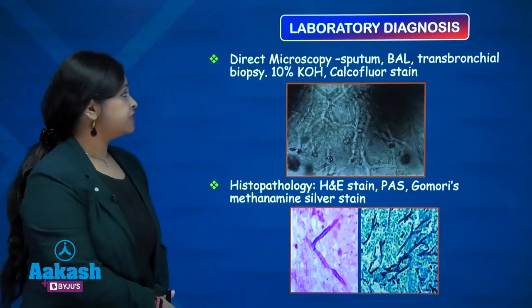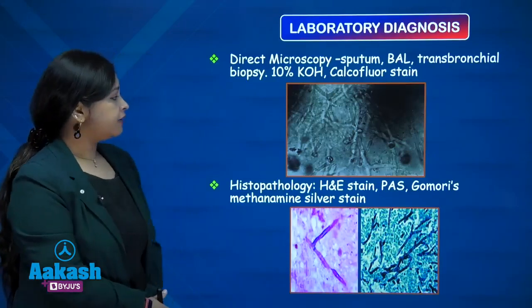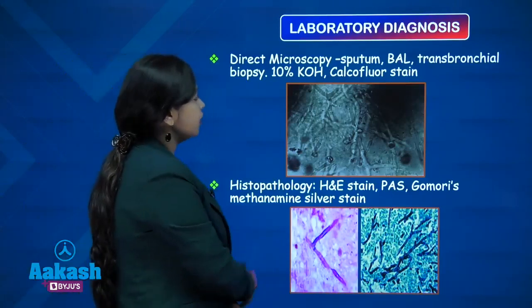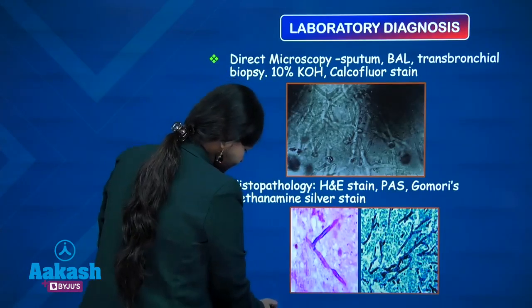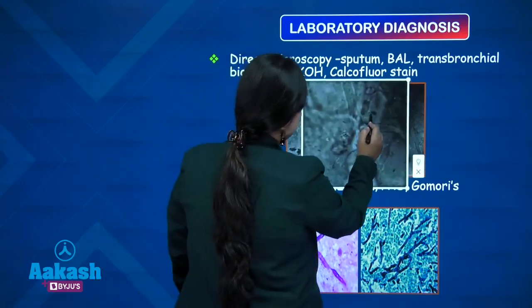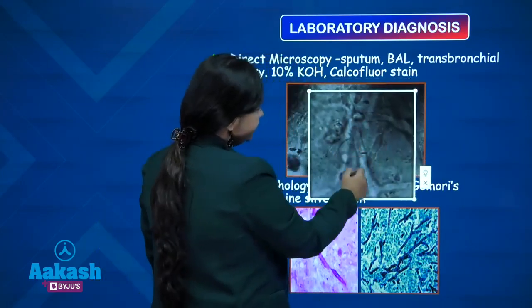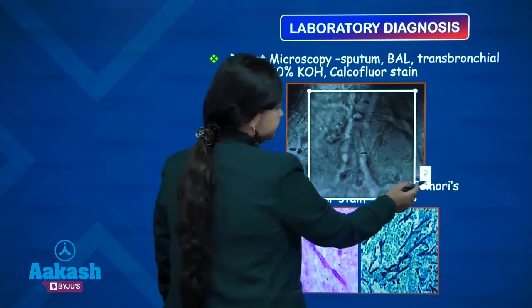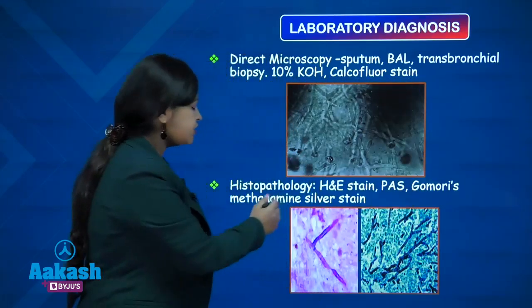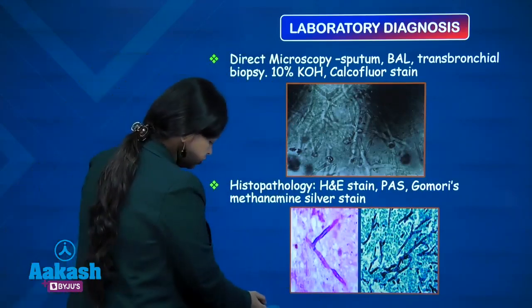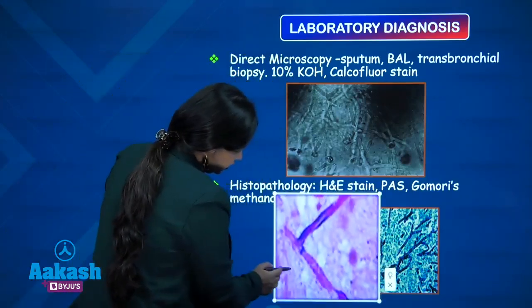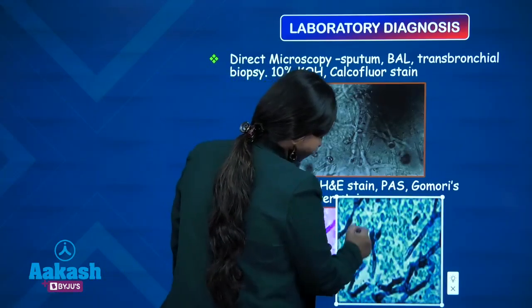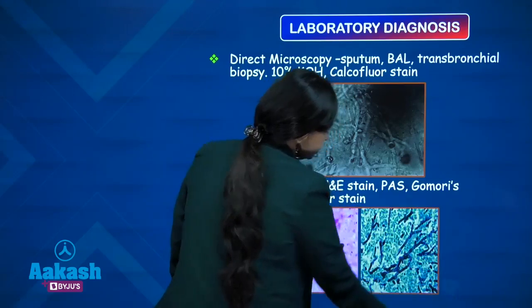Coming to the laboratory diagnosis of aspergillosis, on direct microscopy of sputum, BAL, transbronchial biopsy or KOH mount, you can see these are the long septate hyphae which are narrow angled and thin. On histopathological staining also you see these are the septate hyphae of aspergillus with acute angled branching.